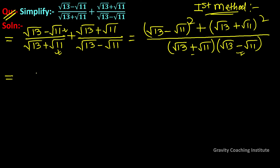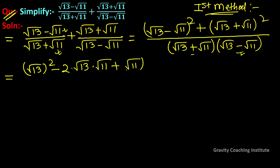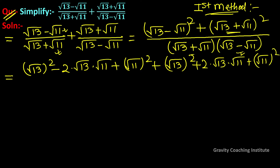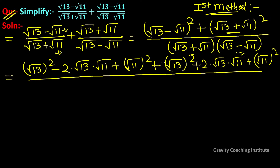Expanding: for the first term we get (√13 - √11)² and for the second term (√13 + √11)². In the denominator, using the identity (a + b)(a - b), this gives √13² - √11².